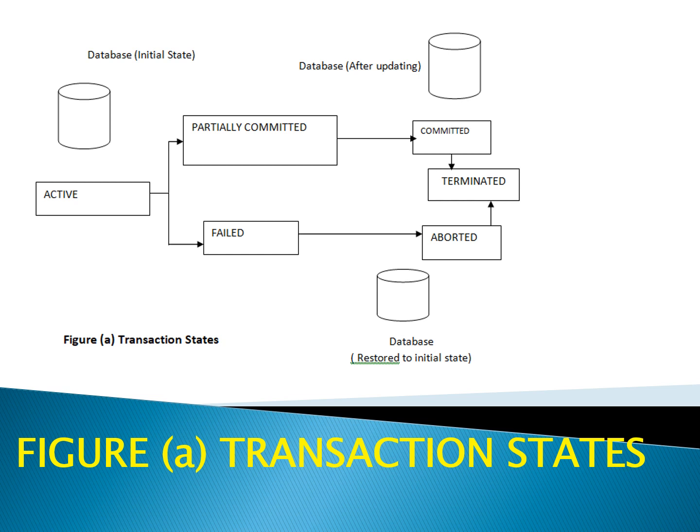Look at this diagram. This is a pictorial representation of the various transaction states. Initially the database is in the initial state. After that, it moves to active. Then it moves to partially committed, then to committed. When committed, the database will be updated. If the transaction has failed, it will come to the aborted state, and the database is restored to the initial state. After aborted or committed, it will come to a state called terminated. We will look at each in detail.